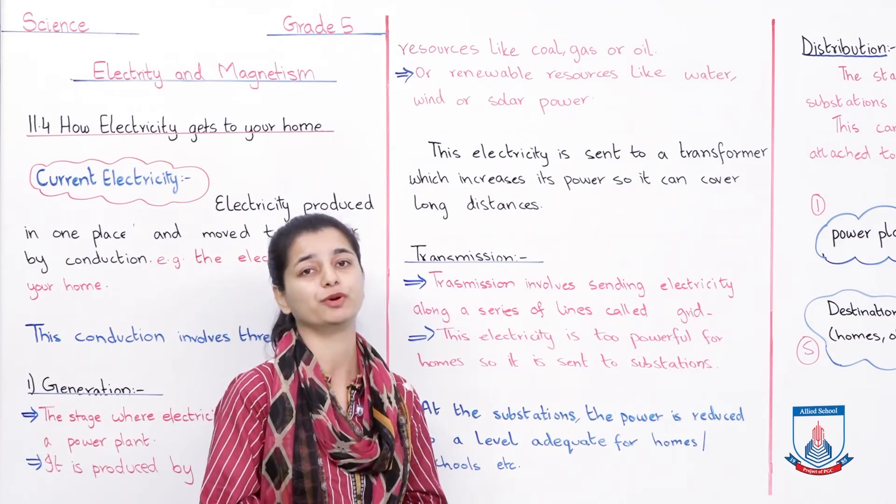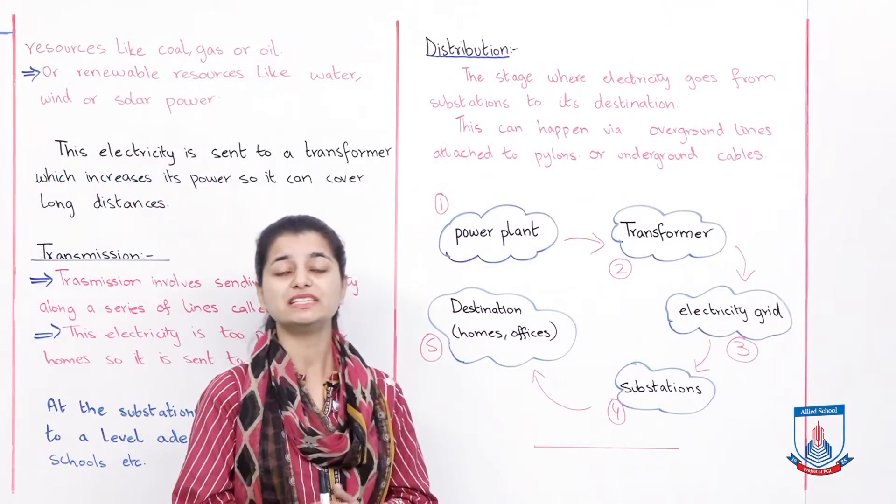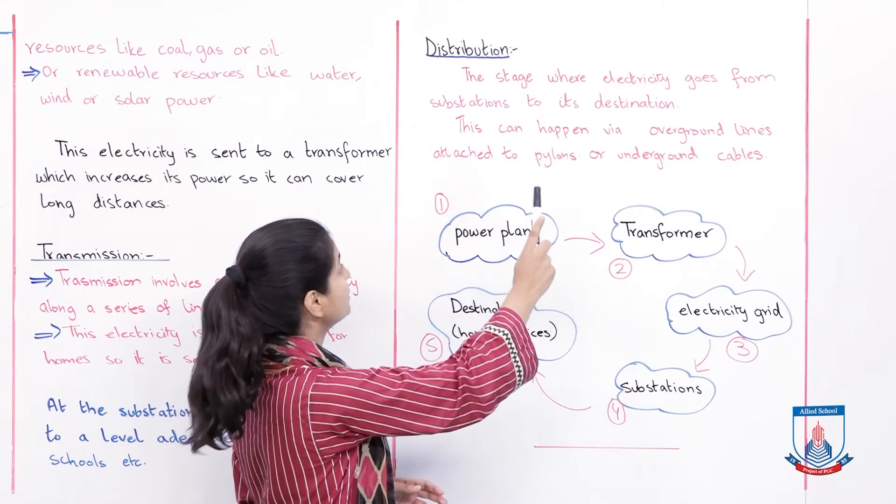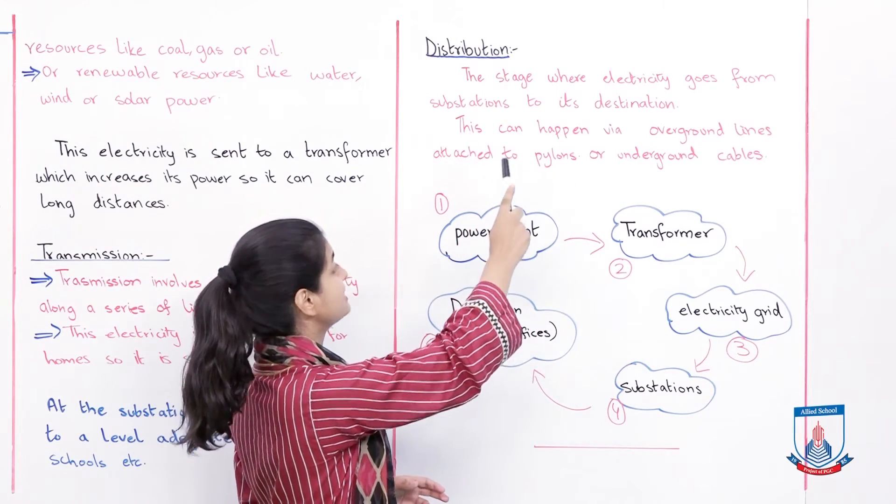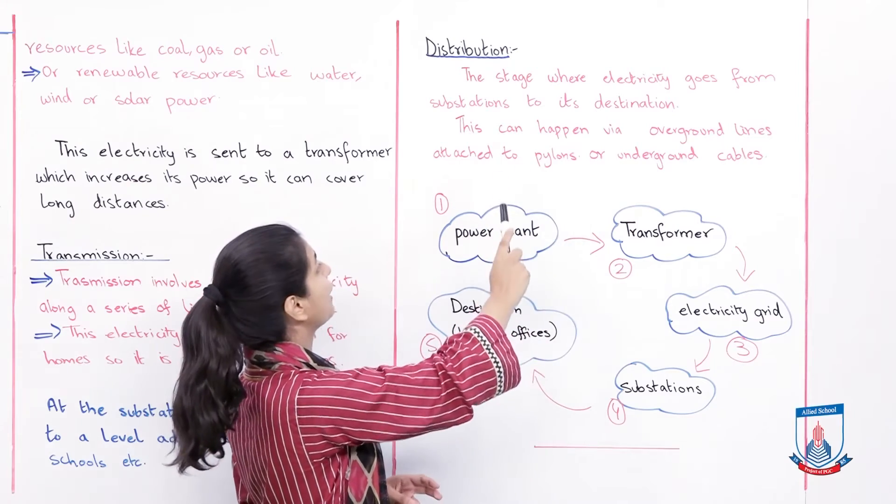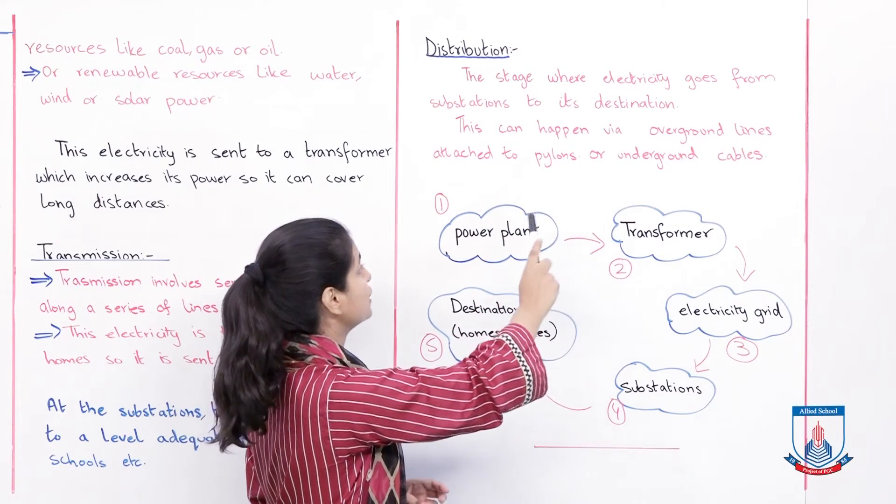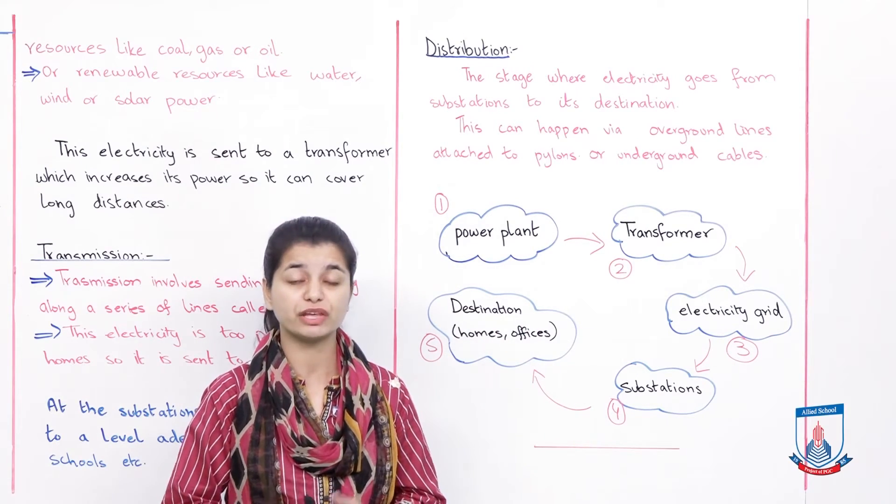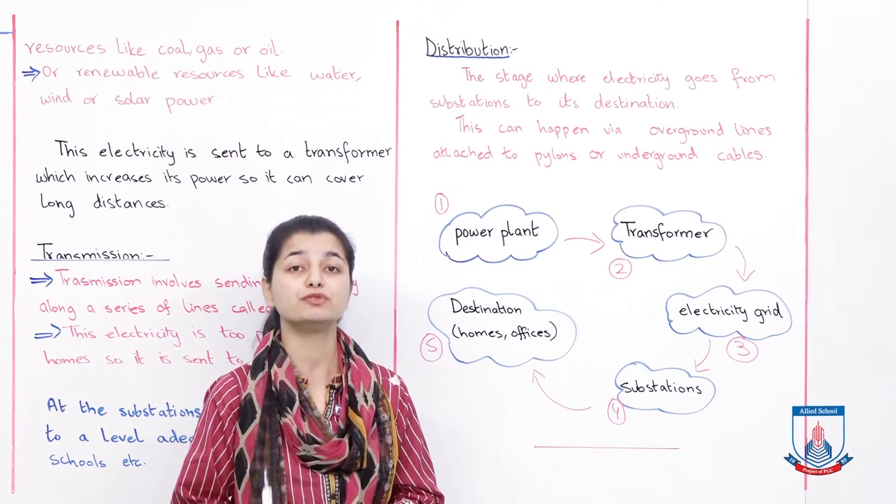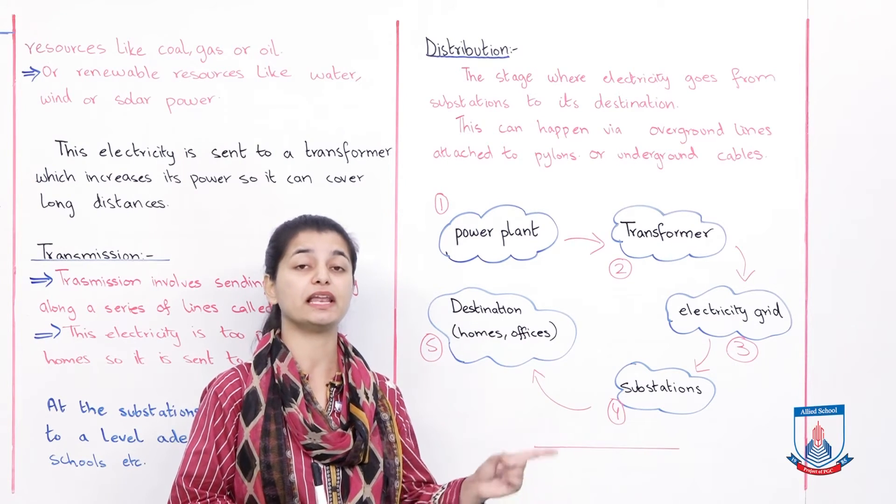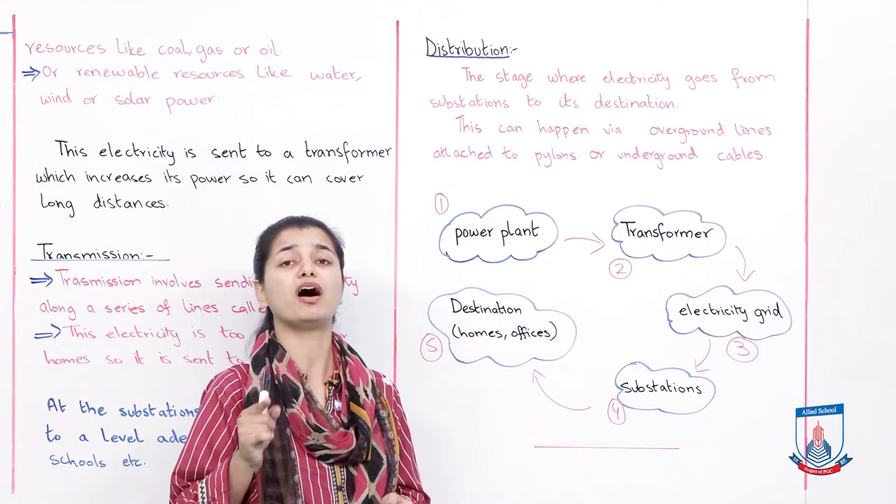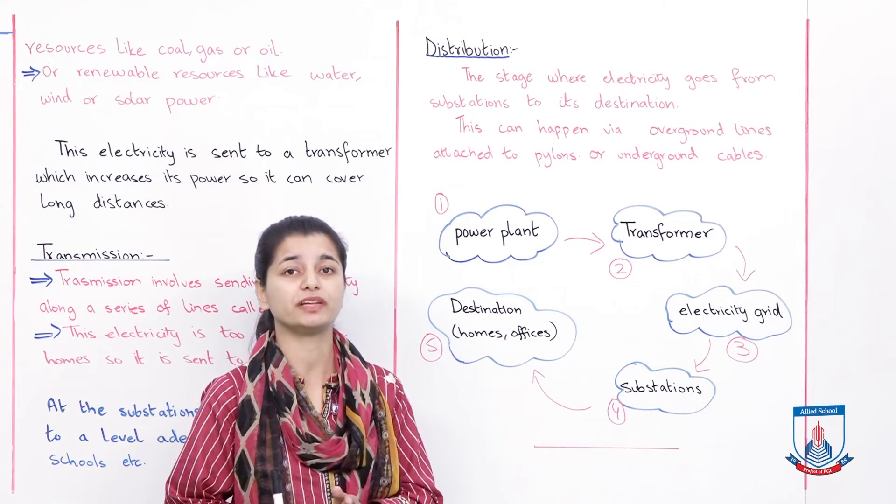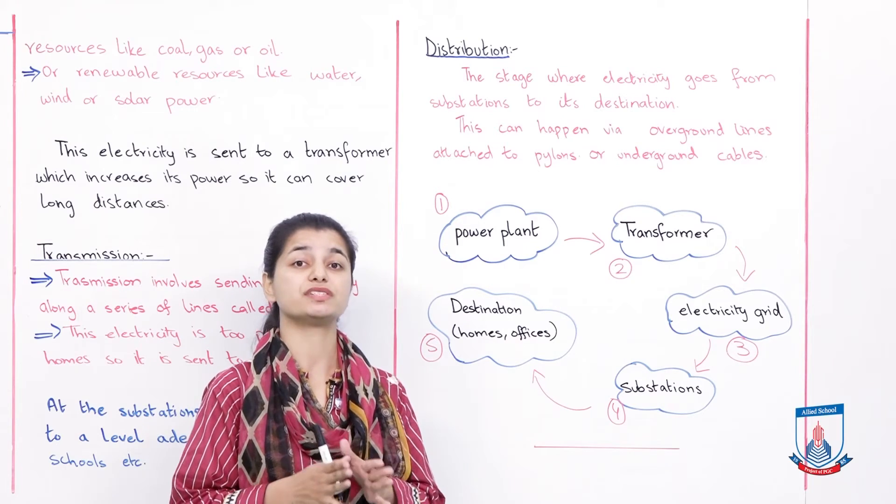The third stage is called distribution. Let's read what that's about. The stage where electricity goes from substations to its destination. The next stage is distribution, where electricity goes from substations to homes, offices, and schools. This stage is called distribution.